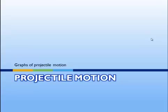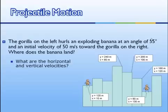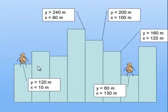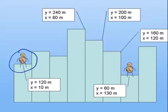Anyway, today we're going to talk about graphs of projectile motion and we're going to recreate that scene you just saw, but we're going to play Gorillas on our calculator. To do that, let's start by exploring a particular problem. Here's the city skyline — you can see the heights of the buildings and the locations of two gorillas. The gorilla on the left decides to throw a banana at a specific angle and velocity, and we want to see where that banana goes.